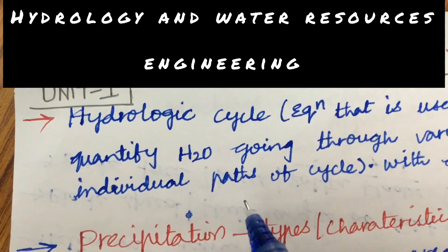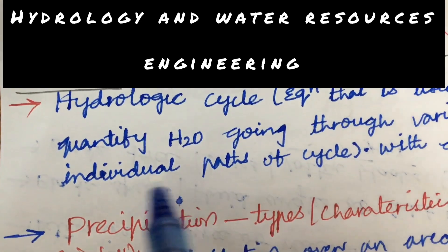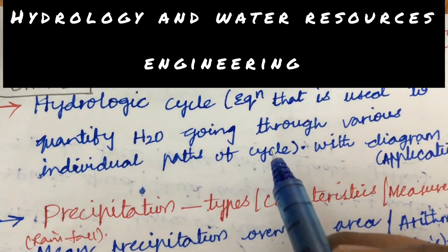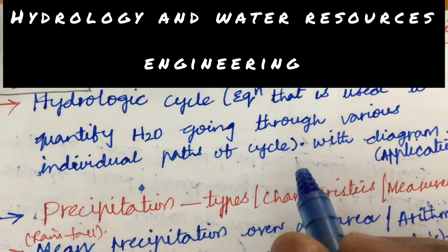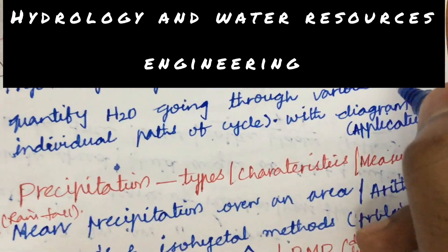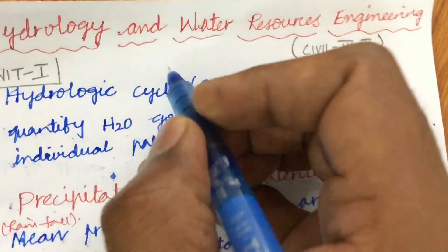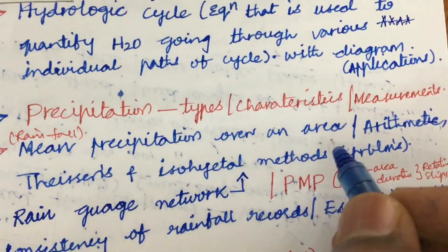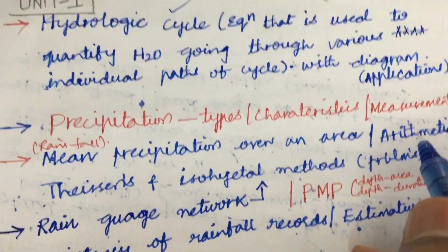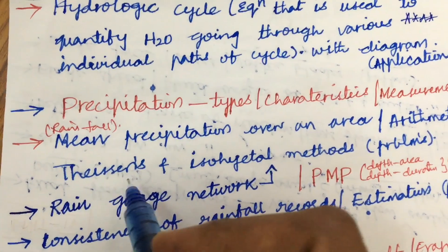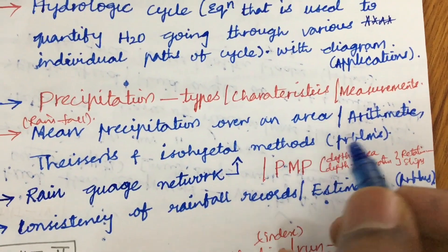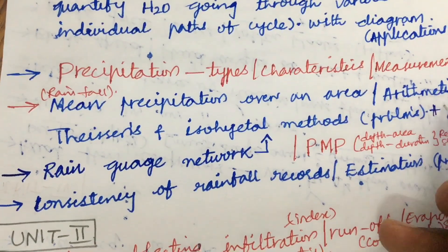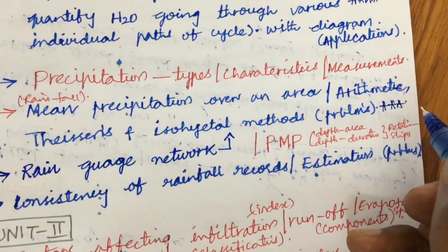First, we look at the very important gunshot question related to the hydrologic cycle equation, that is used to quantify water going through various individual parts of a cycle with a neat sketch, as well as the applications related to this. Later, precipitation and its types, characteristics, and measurement. The rainfall measurement for mean precipitation over an area is based on arithmetic, Thiessen, as well as isohyetal methods, and the problems related to precipitation — this is one of the gunshot questions.